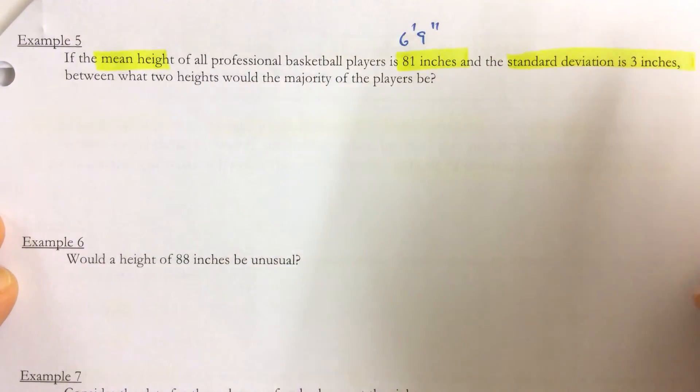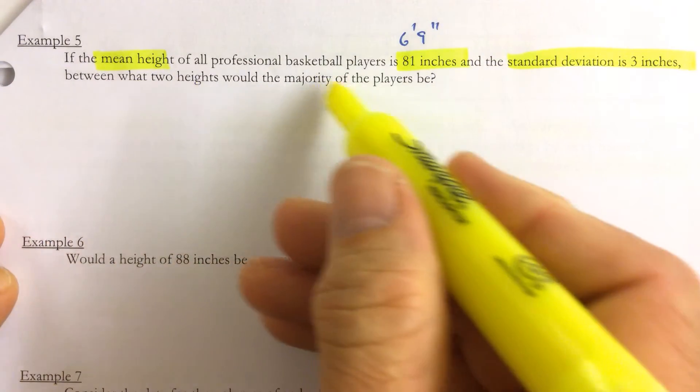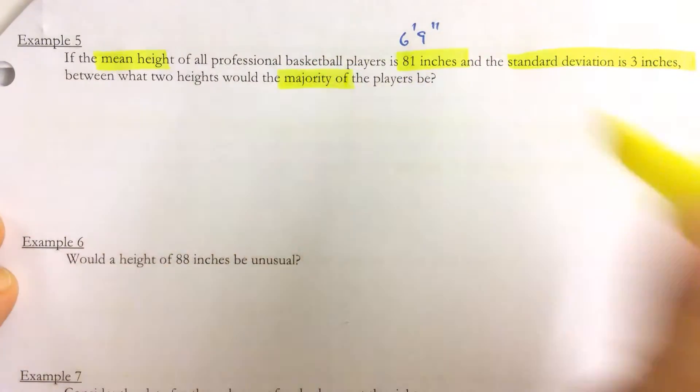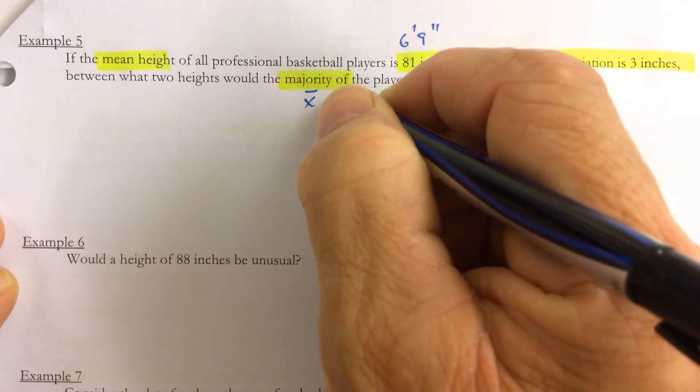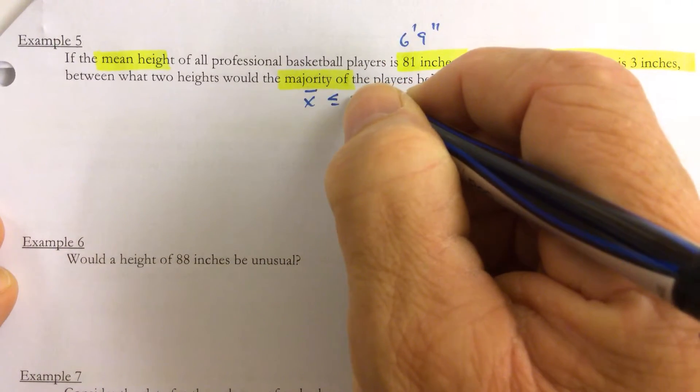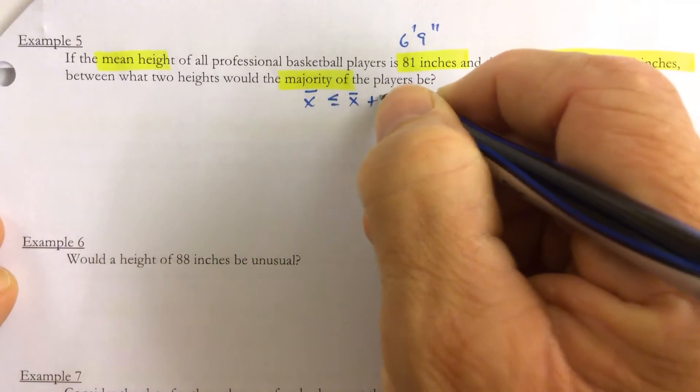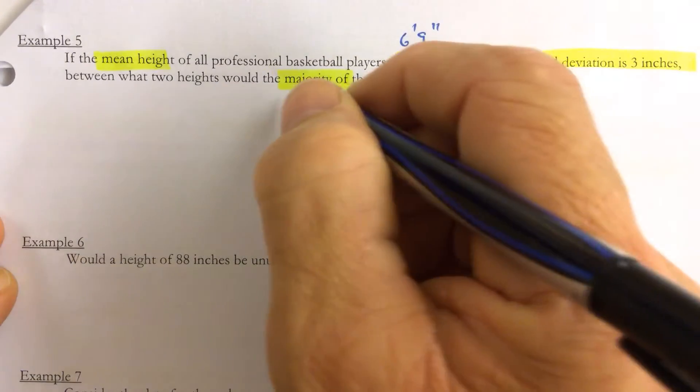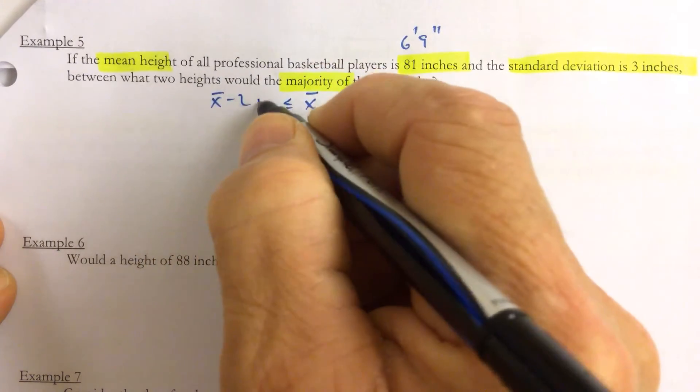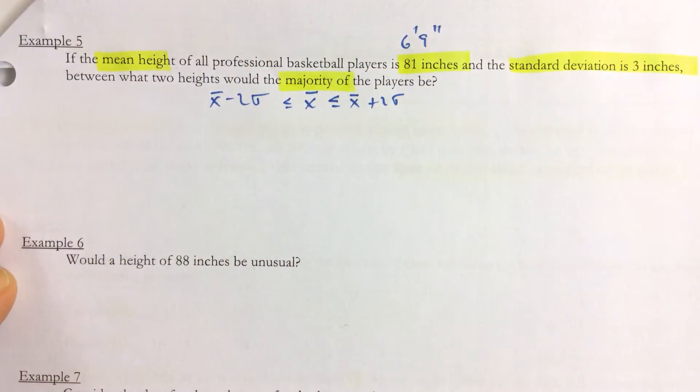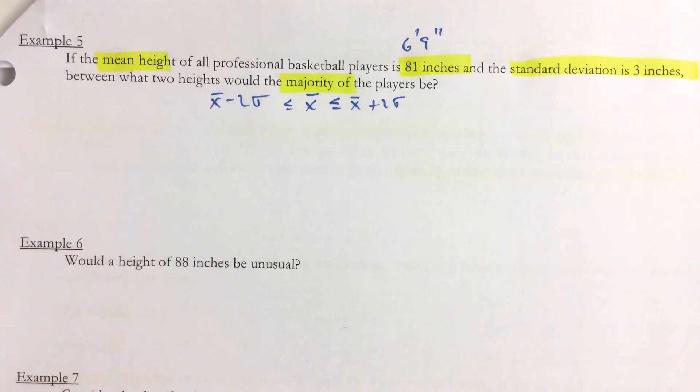So the standard deviation is three inches. Between what two heights would the majority of the players be? Now the majority is going to be somewhere less than or equal to the mean plus two standard deviations and greater than or equal to the mean minus two standard deviations. So this is our key understanding.